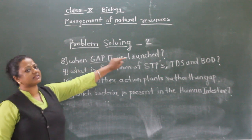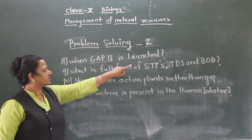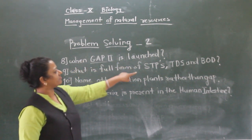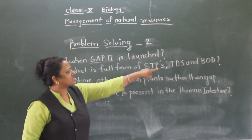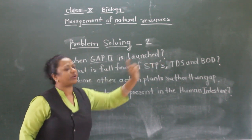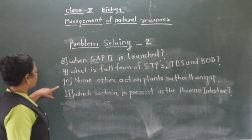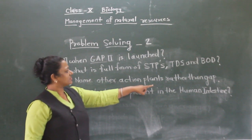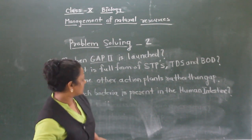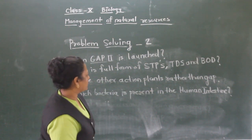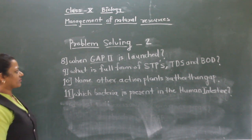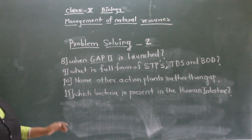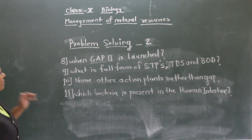When was GAP second launched? What is the full form of STPs, TDS, and BOD? Name other action plans rather than GAP.